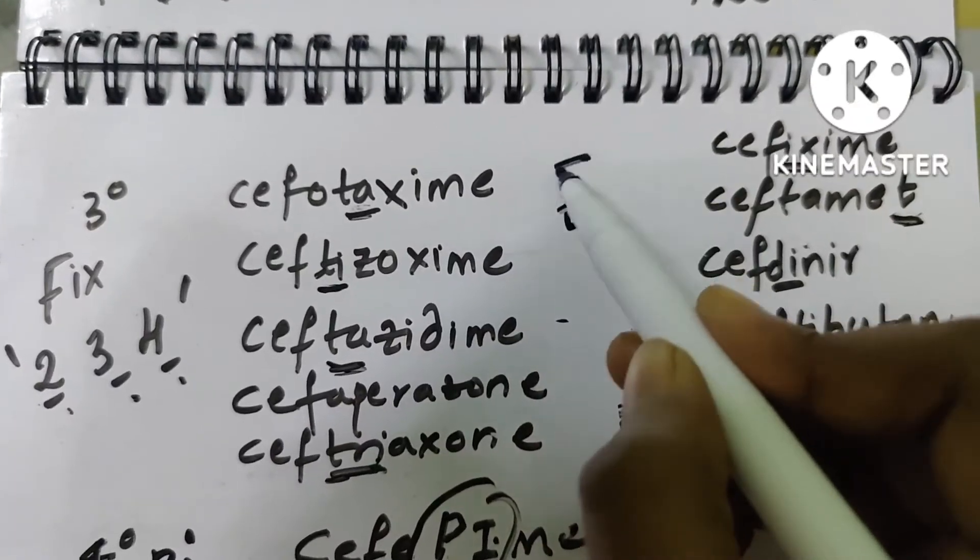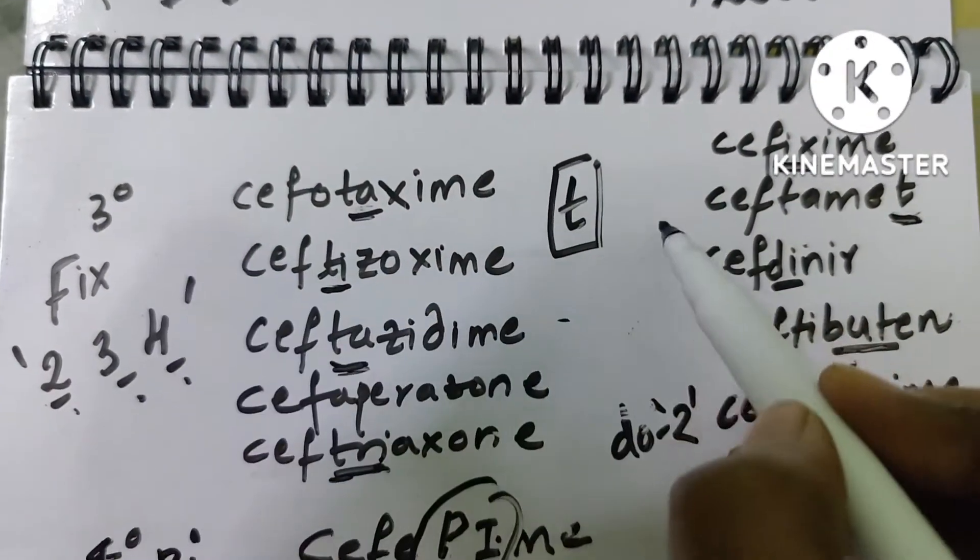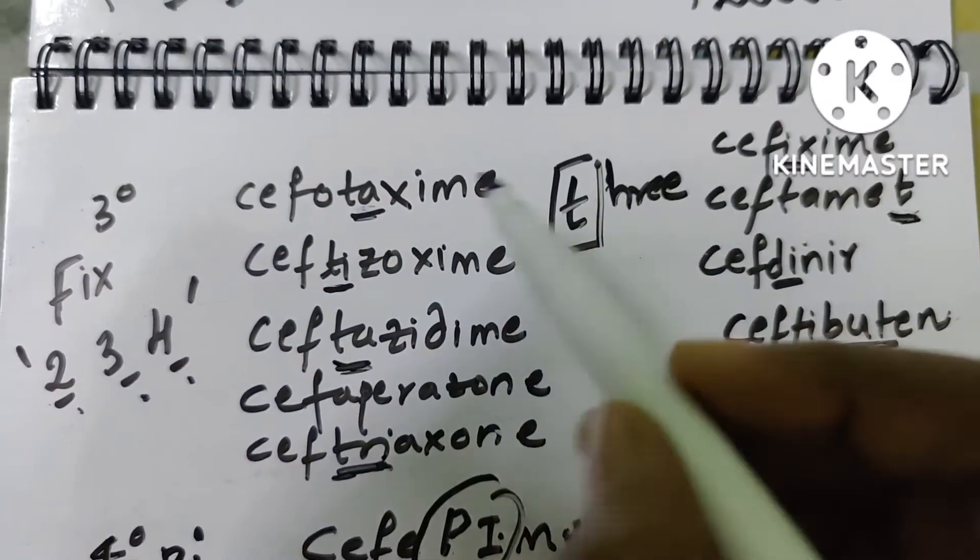Rest all letters have 't' in it - 't' for three. It has 't' in it: ceftazidime, ceftizoxime, ceftazidime, ceftiperazone, ceftizaxone.